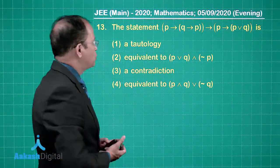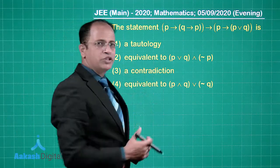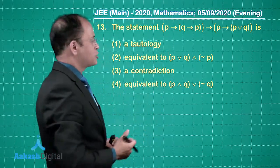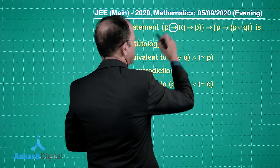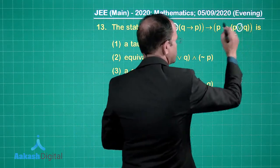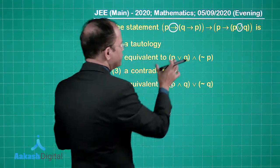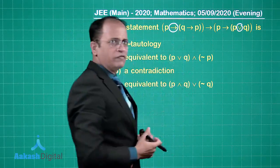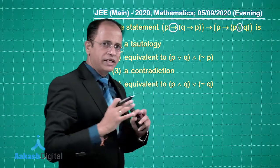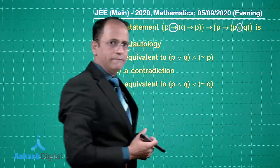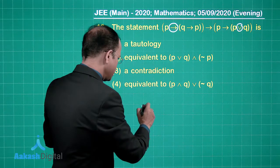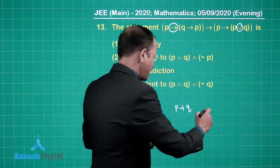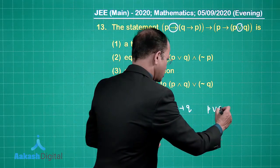Now let us talk about question number 13. This is a problem based on mathematical reasoning. It involves two operators — implication (→) and disjunction (∨). If you know the truth tables of these two operators, the problem can be solved. We need to carefully find the final column.